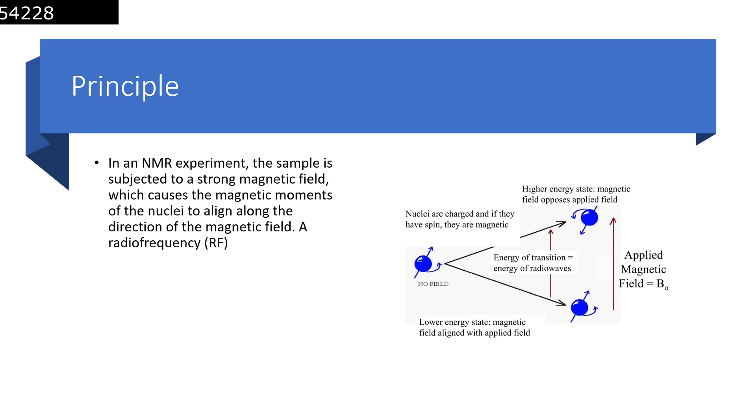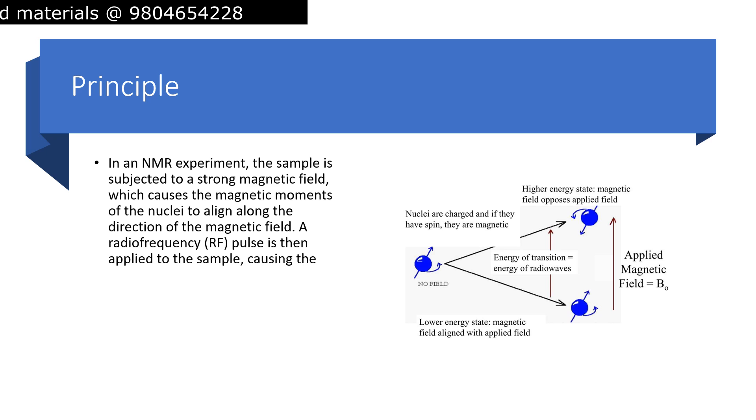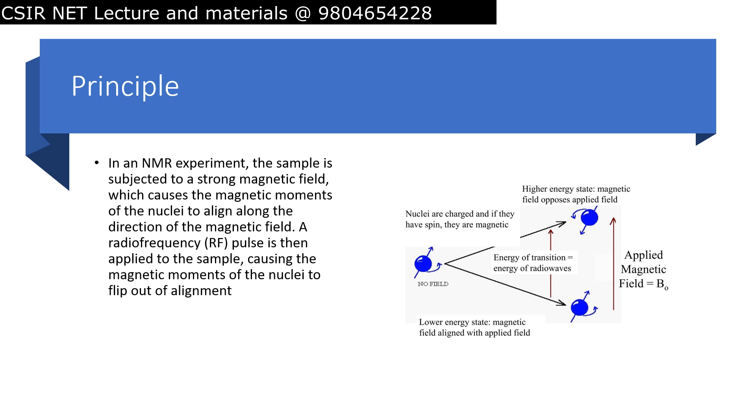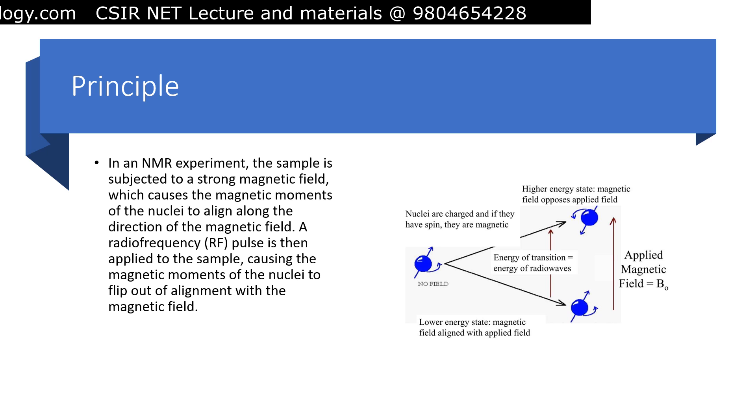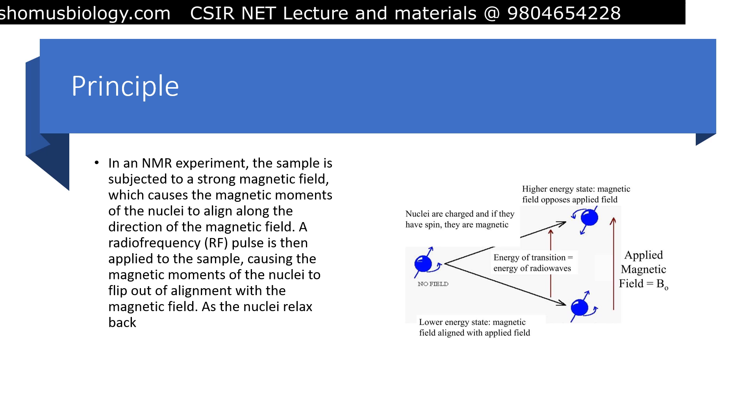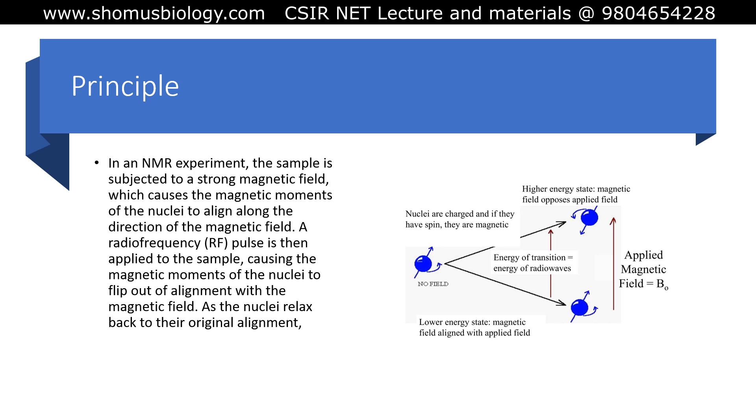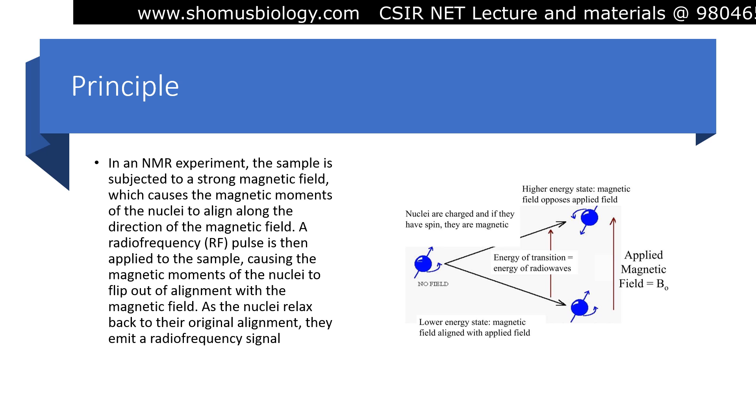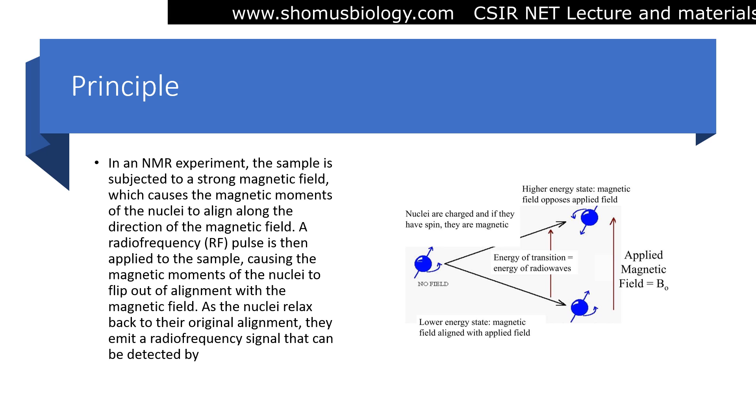A radiofrequency (RF) pulse is then applied to the sample, causing the magnetic moments of the nuclei to flip out of alignment with the magnetic field. As the nuclei relax back to their original alignment, they emit a radiofrequency signal that can be detected by the spectrometer.